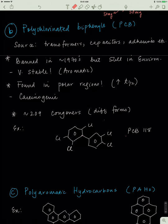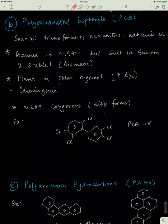The third type of pollutants we'll look at is polychlorinated biphenyls, or PCBs. Polychlorinated meaning there's many chlorines, biphenyl meaning there's two phenyl rings or benzene rings. Where are they coming from? They come from transformers, capacitors, adhesives, etc., used to provide electricity to people.